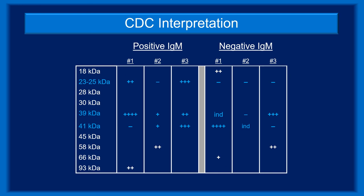Here are examples of both positive and negative IgM Western blot results. The individual bands are a complex composed of Borrelia burgdorferi protein and its corresponding antibody. The first three sets had at least two of the three required bands. The plus signs next to a band indicate the intensity of the signal, but that does not factor into determining whether a Western blot is positive. The three columns on the right are negative results. Although sample 1 had a very strong signal at band 41, the lack of reactivity at 23-25 and 39 makes this a negative result.